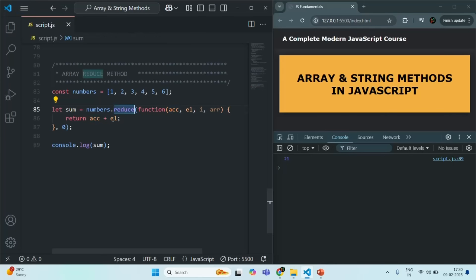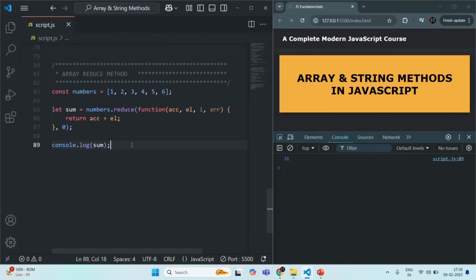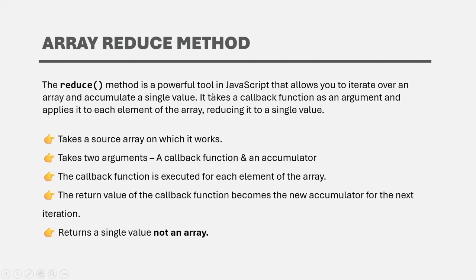When you use the reduce method, you need to pass two arguments: the first is the callback function applied to each element of the array, and the second is the initial value for the accumulator. The callback function is executed for each element, and its returned value becomes the new accumulator for the next iteration. Once the loop completes, the reduce method returns a single value — the final accumulator value — not an array.